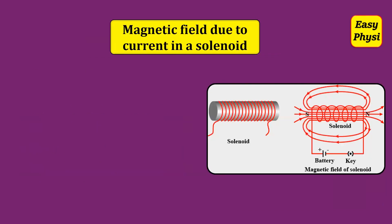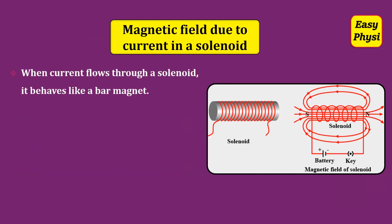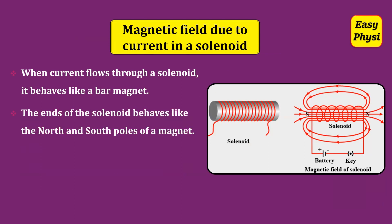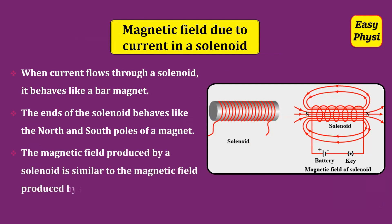Magnetic Field Due to a Current in a Solenoid: When current flows through a solenoid, it behaves like a bar magnet. The ends of the solenoid behave like the north and south poles of a magnet. The magnetic field produced by a solenoid is similar to the magnetic field produced by a bar magnet.